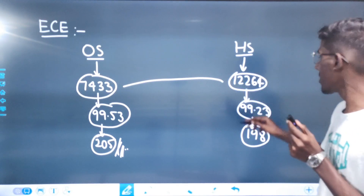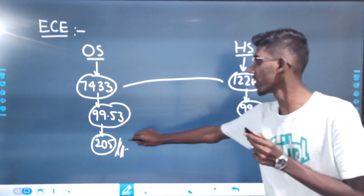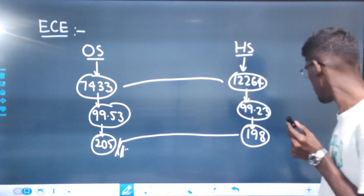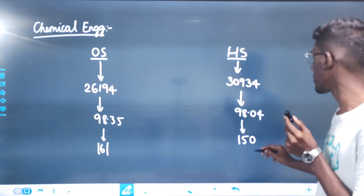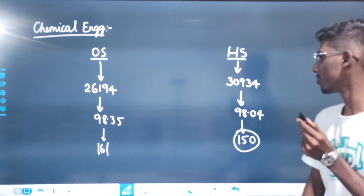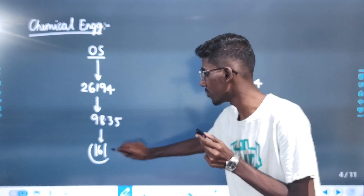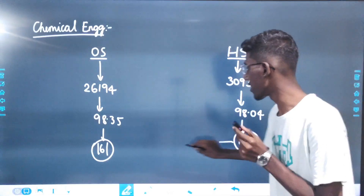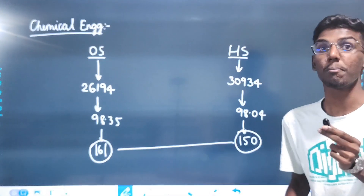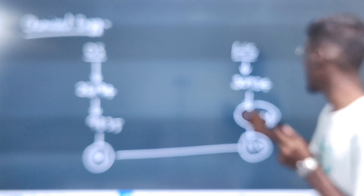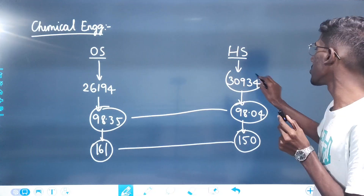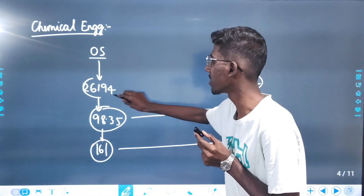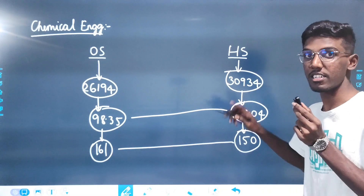For other state, it is 2005 marks. Chemical Engineering is 150 marks for homestate; other state is 161 marks — a difference of 10-11 marks, which is a matter of 3 questions. That gives 98 percentile vs 98.35 percentile, a 0.3 percentile difference. This corresponds to 30,000 rank vs 26,000 rank.